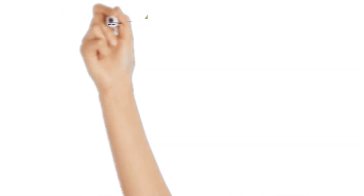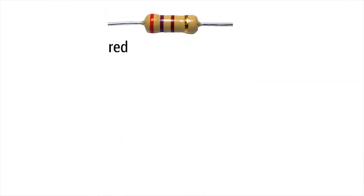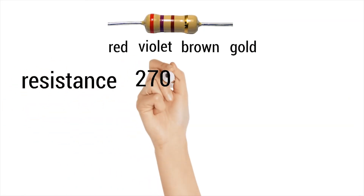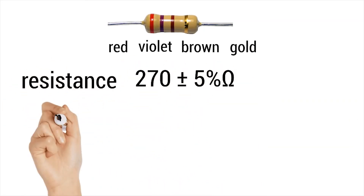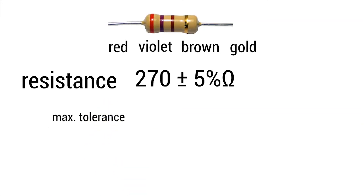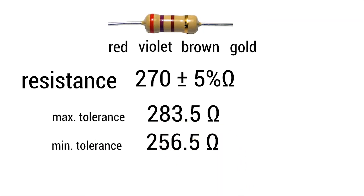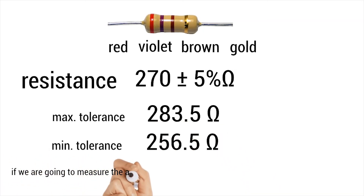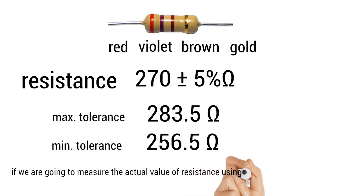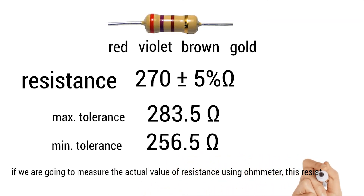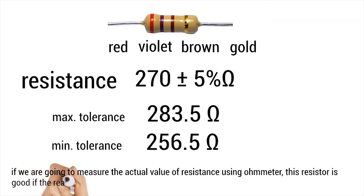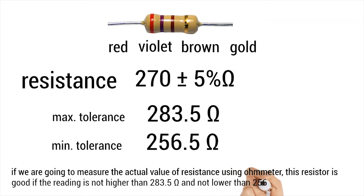We just decoded the four-band resistor with a color code of red, violet, brown, and gold. Its resistance is 270 plus or minus 5% ohms. The maximum tolerance is 283.5 ohms and the minimum tolerance is 256.5 ohms. If we are going to measure the actual value of resistance using an ohmmeter, this resistor is good if the reading is not higher than 283.5 ohms and not lower than 256.5 ohms.